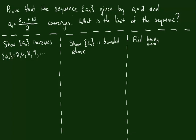We know our sequence starts at 2, and when you put 2 in here, we get 2 plus 10 over 2, which is going to be 6. And you do the same thing to 6 and the same thing to 8, and you can kind of see how the sequence is continuing to increase. This is a good clue that we have an increasing sequence on our hands, and so we have to check it. The way we're going to be able to check this is using mathematical induction.